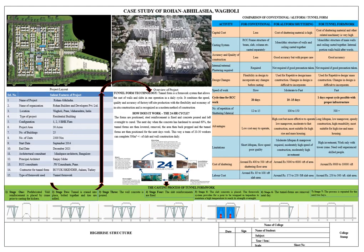Let us understand this with a real-life example of the Rohan Abhilasha case study. We have divided this into four parts starting from the top left. The first part is introduction, where the project layout and basic details like project name, organization, location, and dates are added. The second is the technology part, where which technology is used in the project has been briefed — how it works and what the technology is all about.